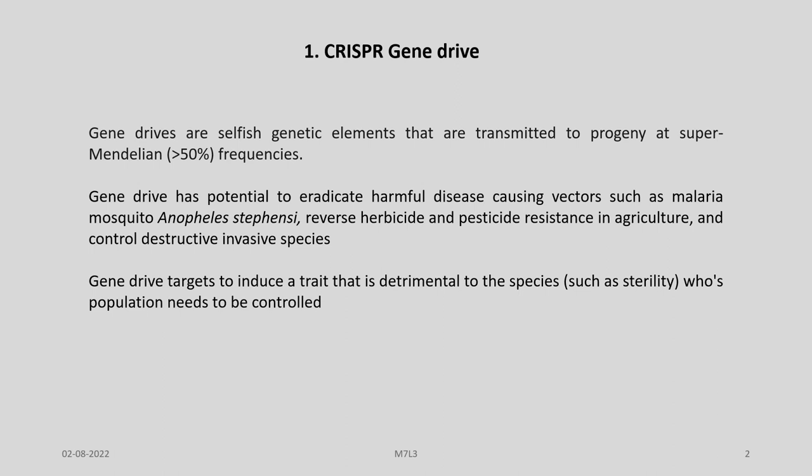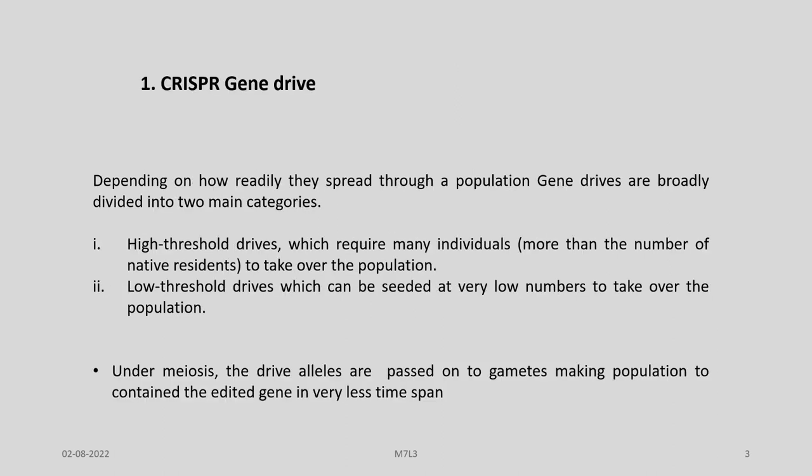For example, in a malaria vector control program, if we are able to induce sterility into the mosquitoes, we can very easily control their population. CRISPR gene drives, depending on how readily the gene drive spreads through a population, are broadly divided into two main categories.